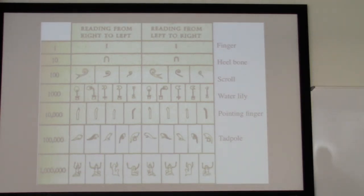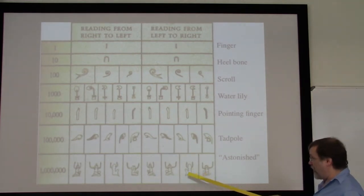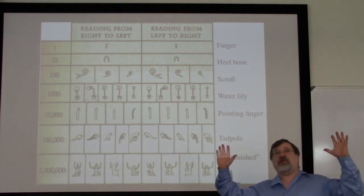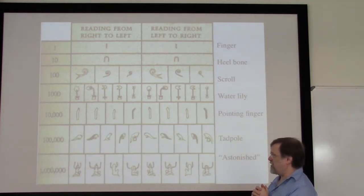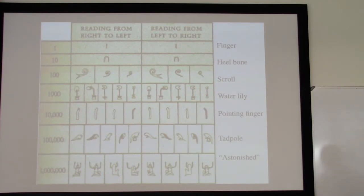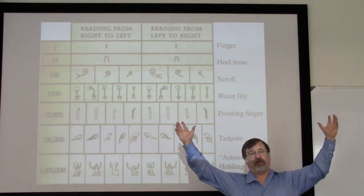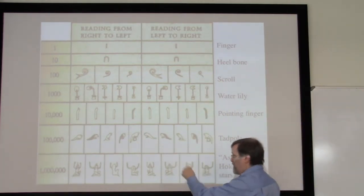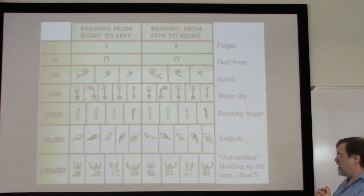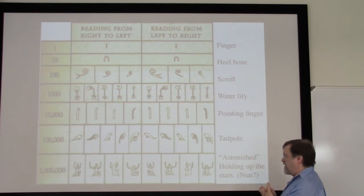Now the symbol for one million is one where there has been some controversy. Most sources talk about this as the 'astonished man' — oh my goodness, look at all those — something surprised by this amazingly large magnitude. More recently, the proposal has been made that this actually represents holding up the stars — a god holding up the nighttime sky with the stars in it. There are millions and millions of stars visible to them. That would certainly be believable.